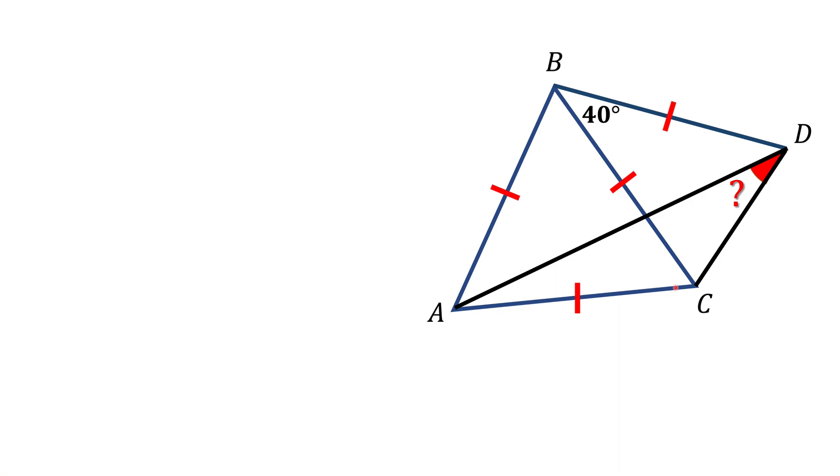We can approach this problem in multiple ways. First of all, notice that this big angle B, ABD, consists of 60 degrees coming from the equilateral triangle plus this 40 degrees. The total is 100 degrees.